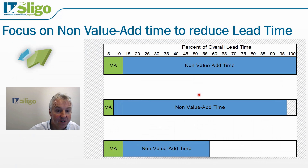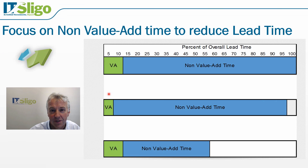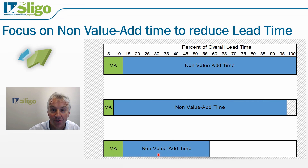Looking at the earlier slide, rather than spending a lot of time trying to reduce the value add time — because once the part is in the lathe, milling machine, and robot, it's pretty efficient — we might find some improvements there, but there is a significant opportunity in reducing the non-value add time. That's where the focus should be.